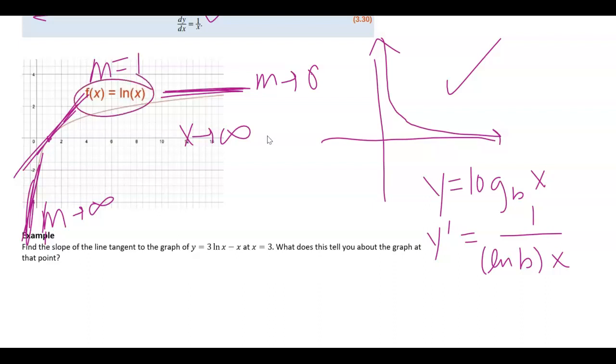Because for natural log, the base is e, when you do 1 over the natural log of e times x, the natural log of e is 1. So that's why we're just left with 1 over x.